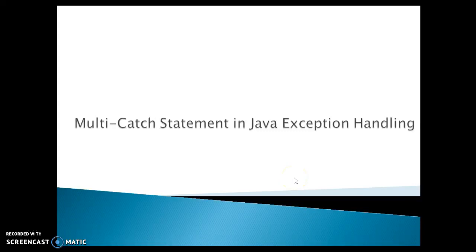In this video we are going to talk about the multi-catch statement in Java exception handling. There has always been criticism of checked exceptions in Java for being verbose and cluttering the code with try-catch blocks. In Java 7, two features — try-with-resources (automatic resource management) and multi-catch statement — have been added to mitigate that problem to a certain extent.